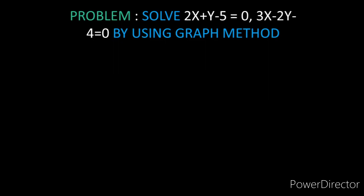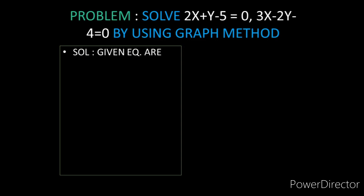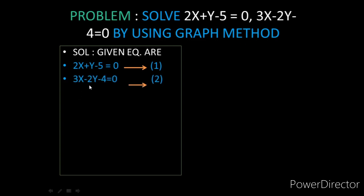First, write down the given equations. Equation 1: 2x plus y minus 5 equals 0. Equation 2: 3x minus 2y minus 4 equals 0. Then, find the ratio of coefficients, because whether the system is consistent or inconsistent depends on those ratios.